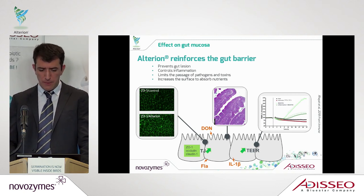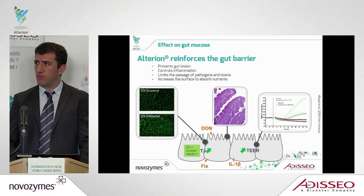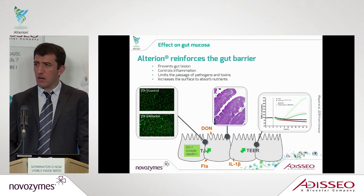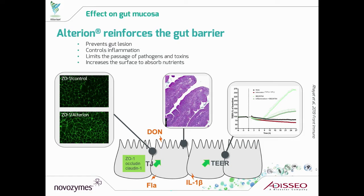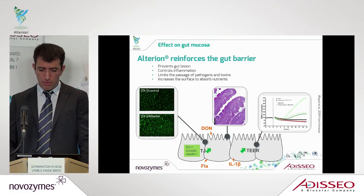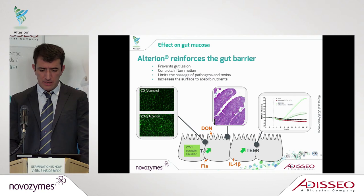Addition of Alterion provides more energy to the animal. On the right is a graph summarizing our in vitro approach, mimicking standard or challenge conditions inducing inflammation and measuring the transepithelial resistance (TER), which is an indirect indicator of gut barrier strength. You can see that when we compare the addition of Alterion to control in both challenge and standard conditions, Alterion improves TER — meaning the epithelium will be stronger and less susceptible to letting bacteria, pathogens, or toxins enter the bloodstream and cause infection.